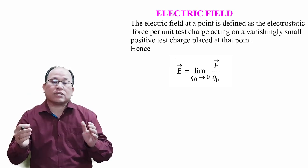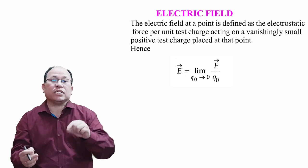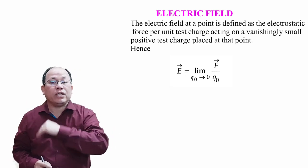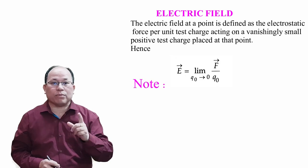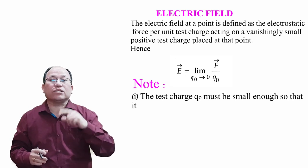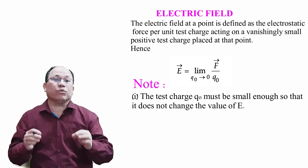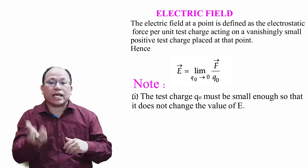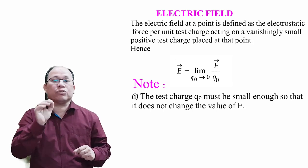The test charge used to create the electric field should be very, very small so that it does not disturb the position of the source charge. You have to note down these points. First: the test charge q₀ must be small enough so that it does not change the value of E. So q₀ should be very small.